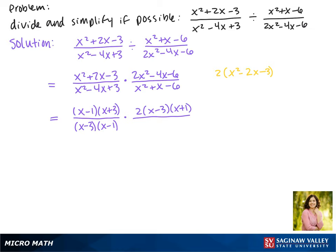On the bottom we have negative 6. The factors of negative 6 that make positive 1 are x plus 3 and x minus 2.